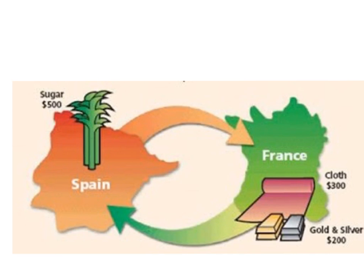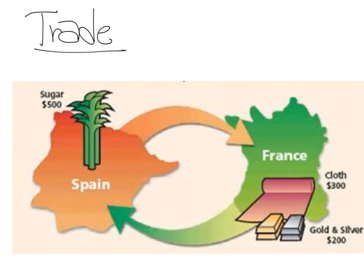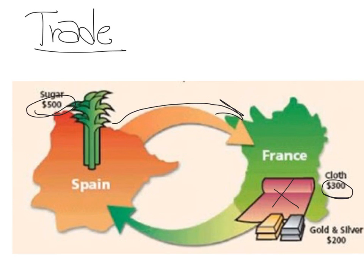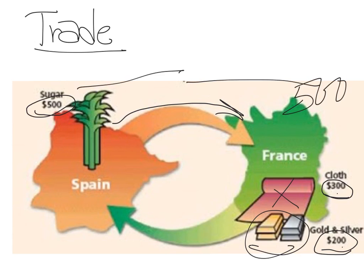Mercantilism is built on the idea of trade. Let's look at two countries and their trade. Spain is sending sugar out to France, and the value of that sugar is 500 million dollars. At the same time, France is sending cloth worth 300 million dollars and gold and silver worth 200 million dollars back to Spain. So 200 and 300 equals 500, and we have 500 on each side — they cancel each other out.